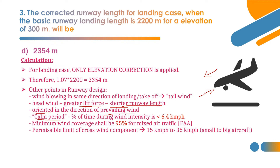Calm period means the percentage of time during which wind intensity is less than 6.4 km/hr. As per FAA recommendation, minimum wind coverage for mixed air traffic shall be 95%, and in some high-traffic cases 98%. The permissible limit of crosswind component ranges from 15 km/hr for small aircraft to 20–25 km/hr for medium aircraft, and 35 km/hr for large aircraft.